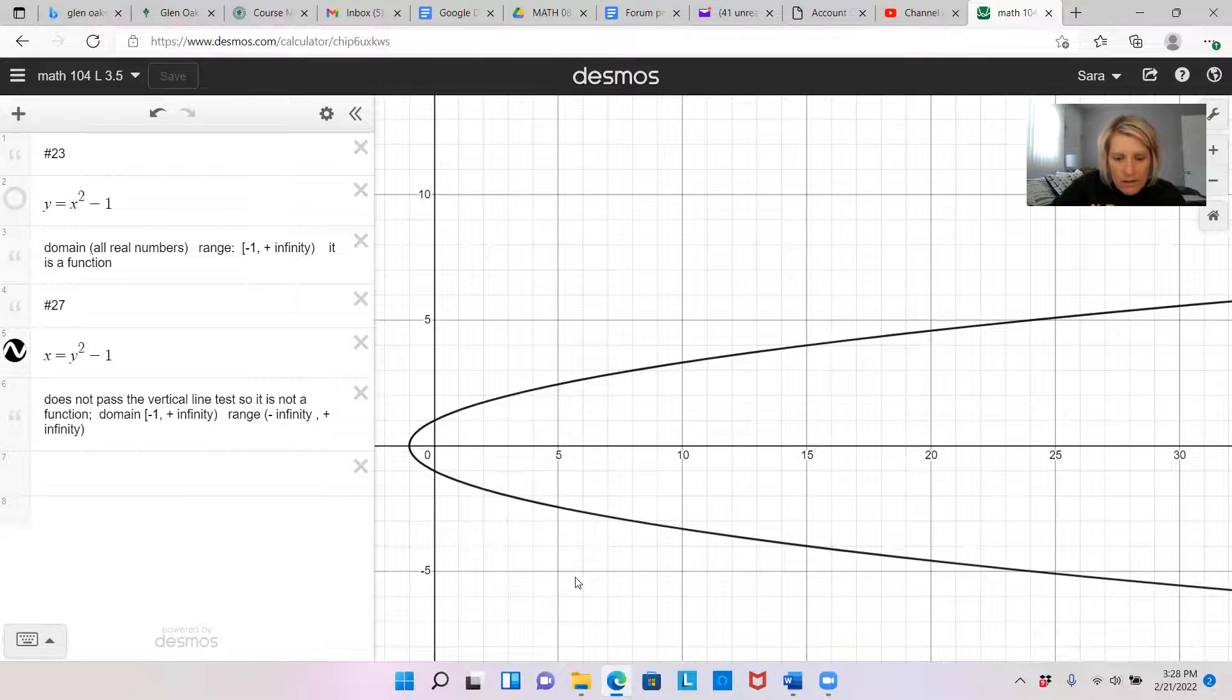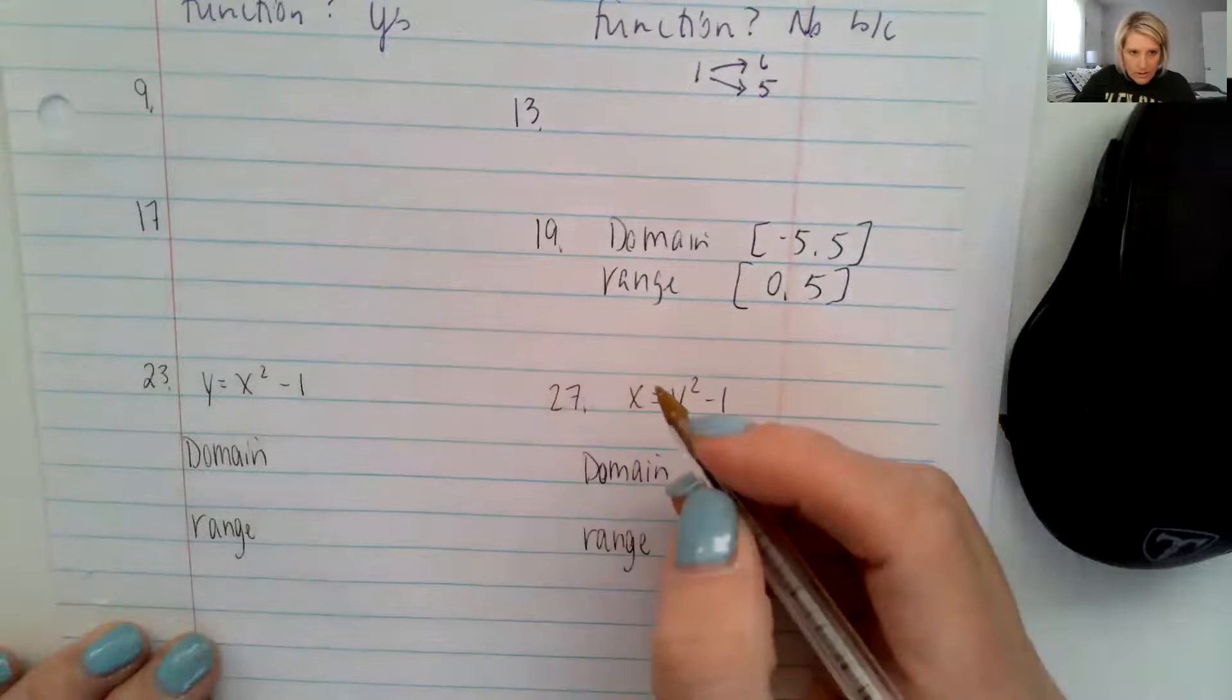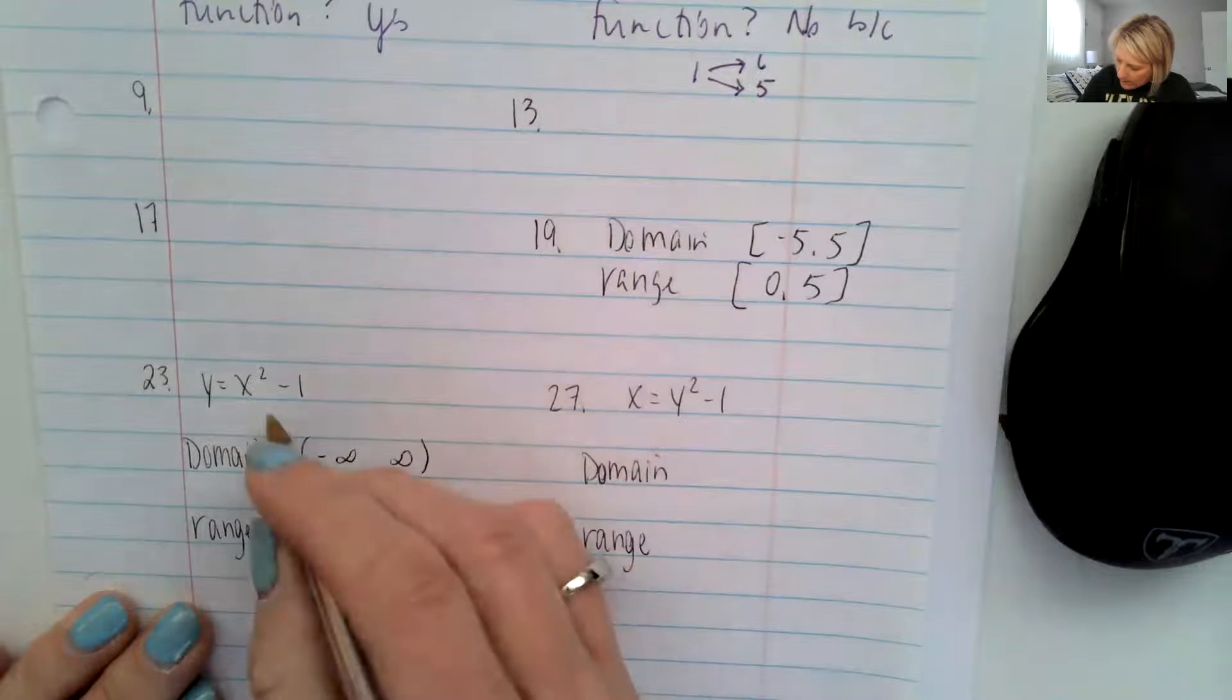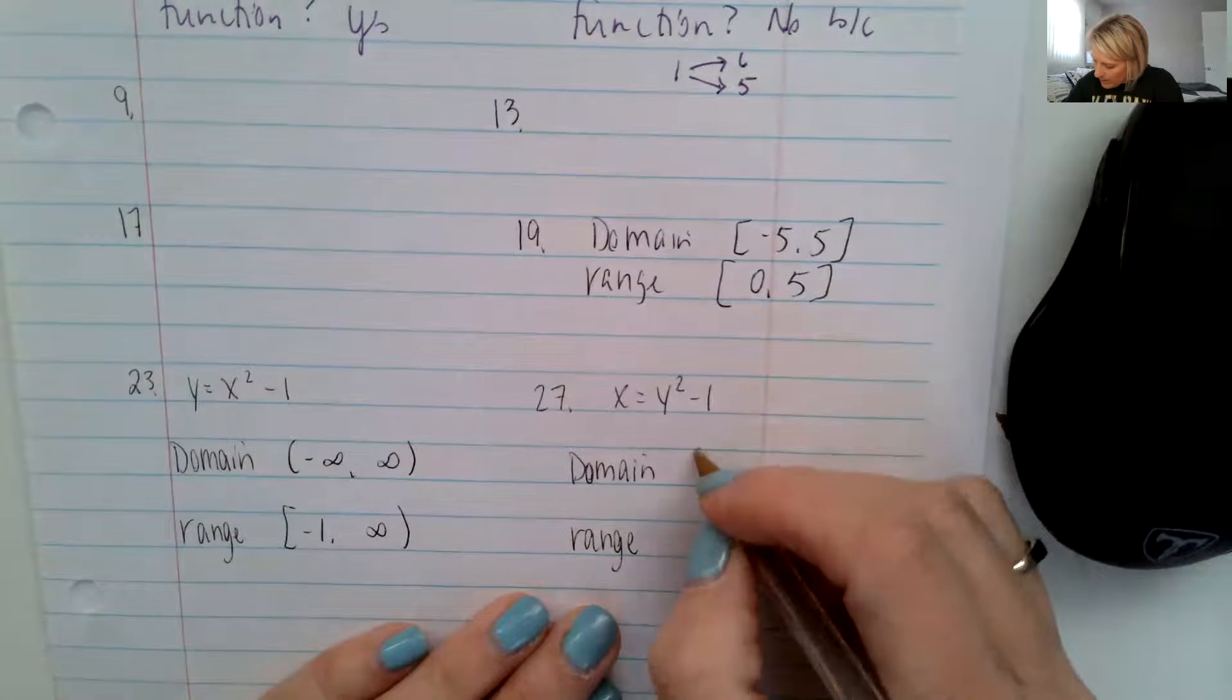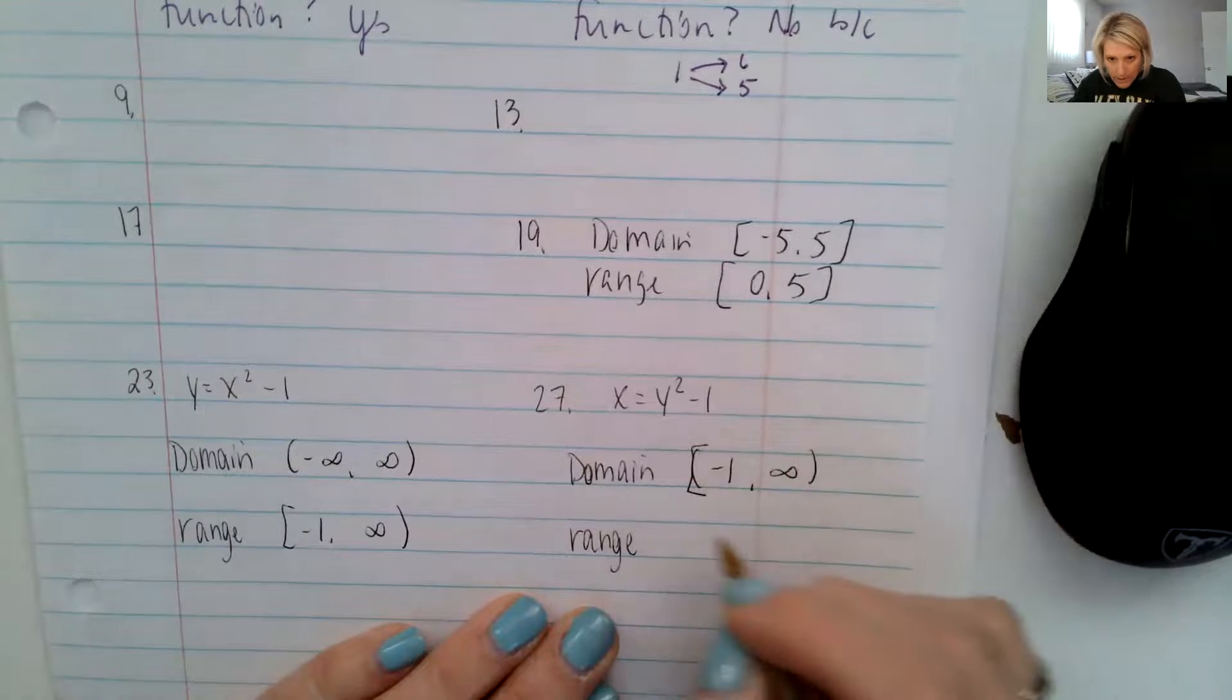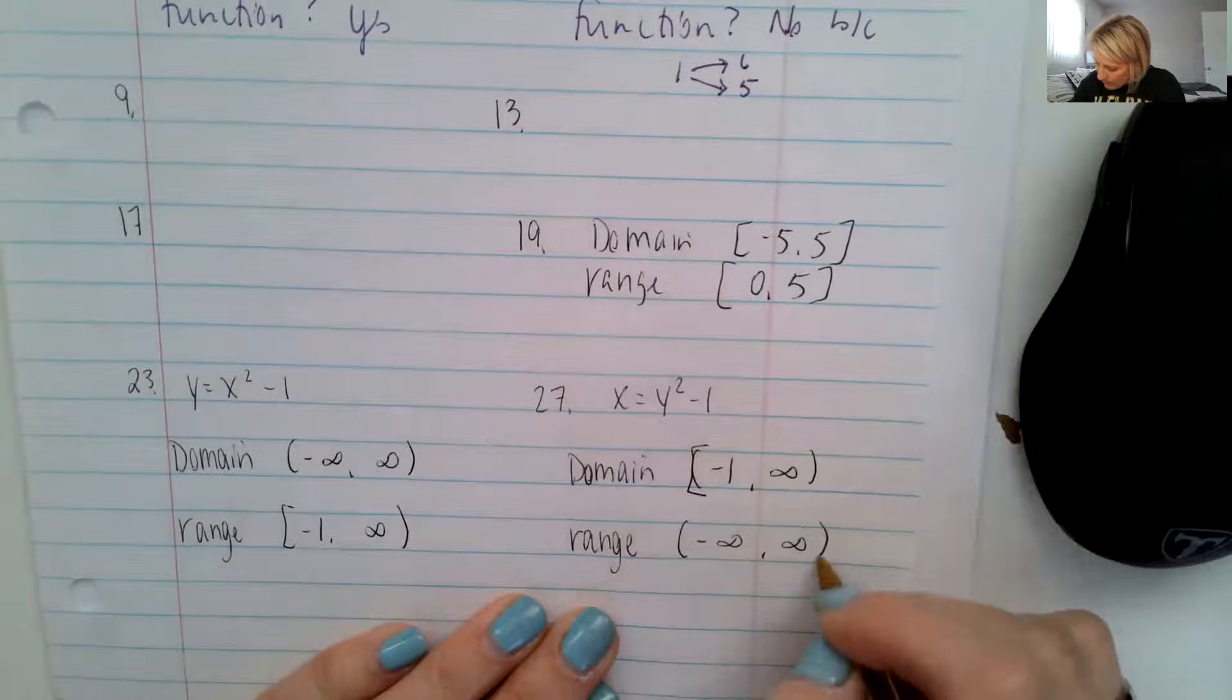So I'm going to just go to my paper so you can see here how I've got those written. So on this one it's a negative infinity to a positive. And then this one was a negative one to a positive infinity. And then the domain here was a negative one bracket to a positive infinity. And then the range was negative infinity to a positive infinity.